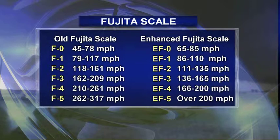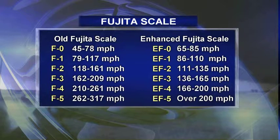The old Fujita scale is on the left-hand side — we call it the F scale. It went from F0 to F5, and you can see the corresponding winds to each category. The enhanced Fujita scale just came into place in the past several years, and you can see how the wind speeds have changed compared to the old Fujita scale.